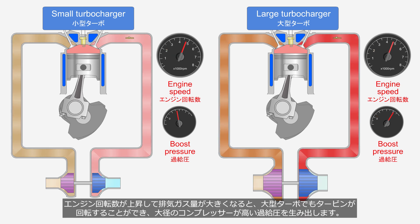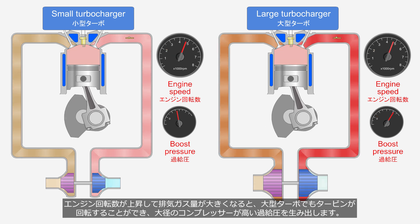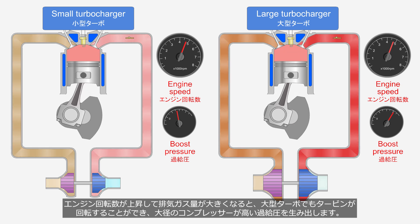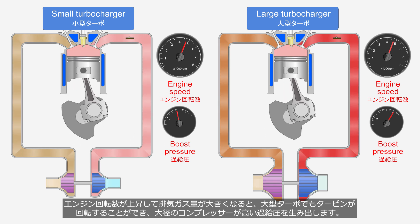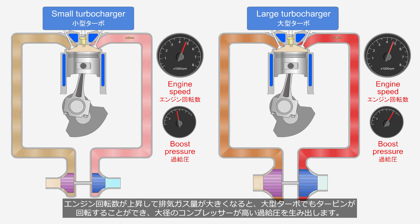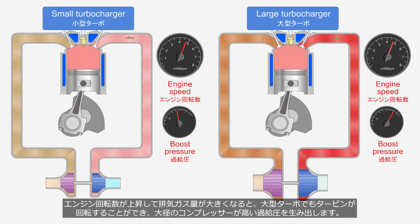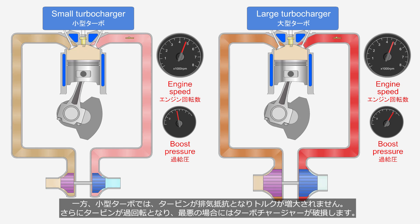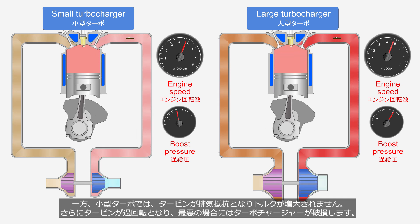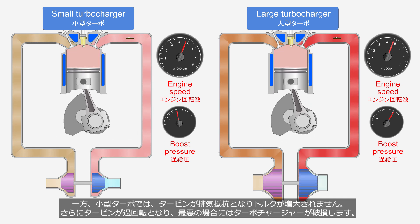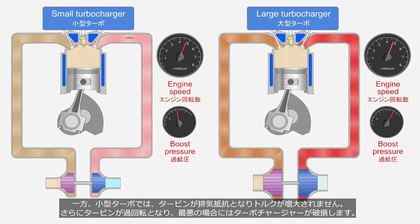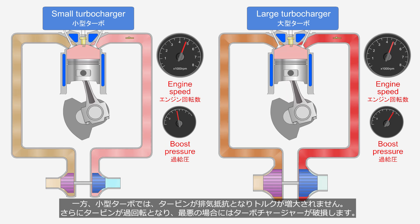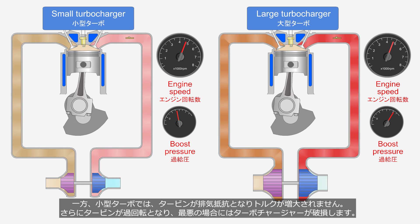As the engine speed increases and the exhaust gas volume becomes larger, even large turbochargers allow the turbine wheel to rotate, and the large diameter compressor wheel generates high boost pressure. On the other hand, in small turbochargers, the turbine wheel becomes exhaust resistance and does not increase torque. Additionally, the turbine wheel may experience overspeed, and in the worst case, the turbocharger may be damaged.